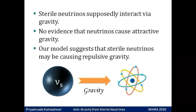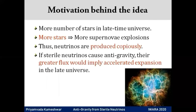We put forth a model that proposes a repulsive gravity being generated from sterile neutrinos. The motivation behind this idea is mainly supernovae. More number of stars are existent in the late-time universe, especially the massive ones. This leads to a copious amount of neutrinos being produced both by stellar processes as well as by supernovae explosions. And if sterile neutrinos do cause antigravity, their greater flux would imply acceleration of the expansion of the universe in late times.